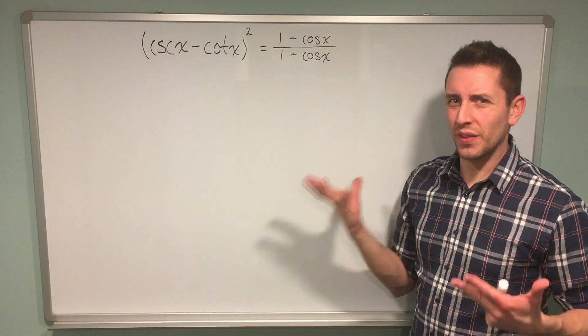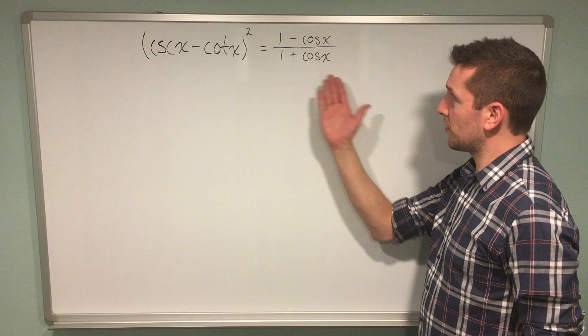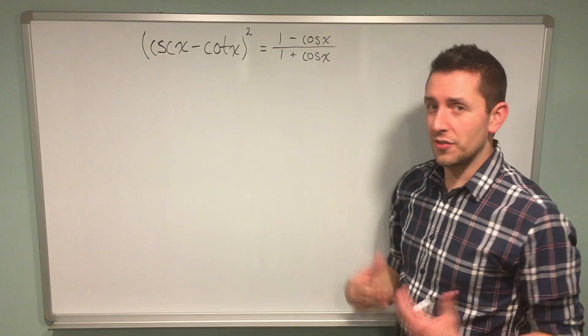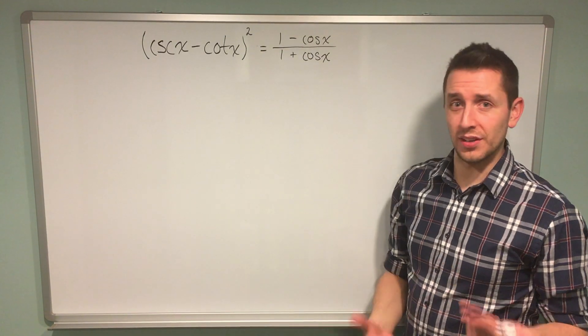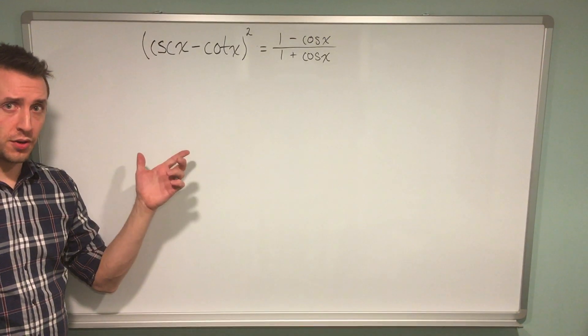In addition, the right-hand side doesn't have anything I can simplify. I've got everything in terms of cosine already, and that's usually one of the first steps I take—writing everything in terms of sine and cosine. So I'm going to jump back over to the left-hand side.